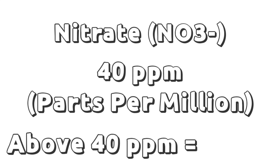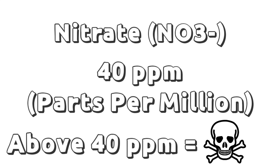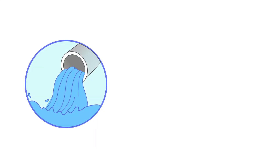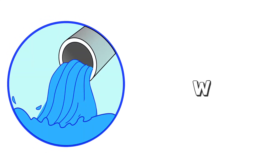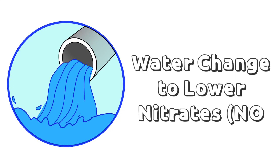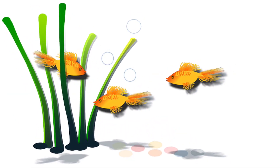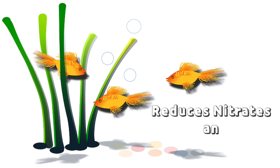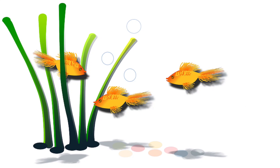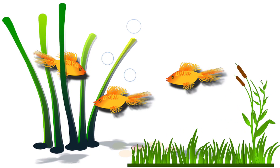When the nitrate level exceeds the 40 parts per million threshold, it may also affect the health of our fish. That is why we do water changes to reduce the nitrate level in our aquarium. Having live aquatic plants also helps reduce the nitrate level and some ammonia in our aquarium.